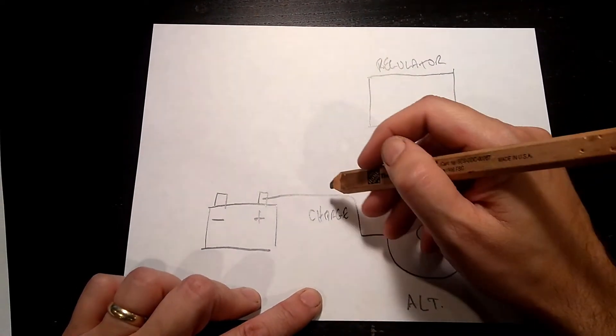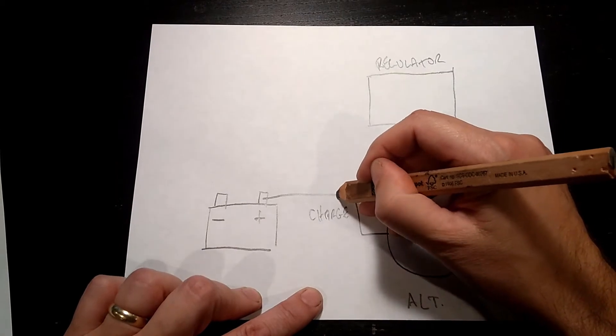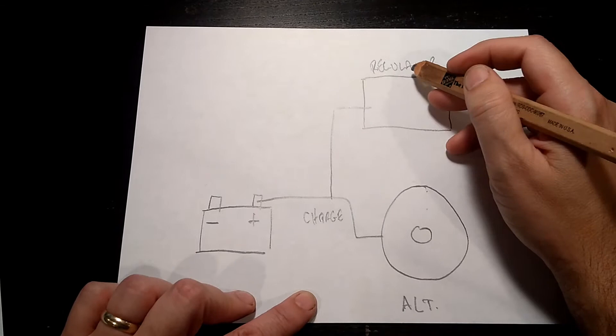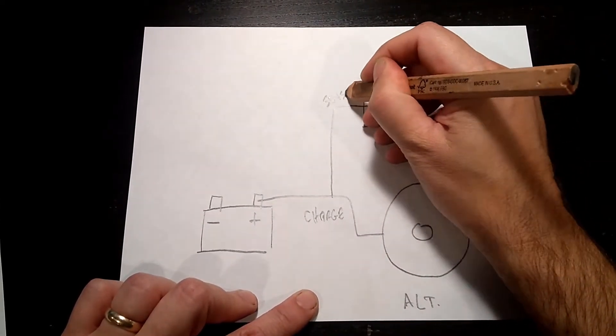Then on the voltage regulator, coming off of that same positive terminal, we typically will have a sense wire. This is so that the regulator can know what the voltage in the system currently is.